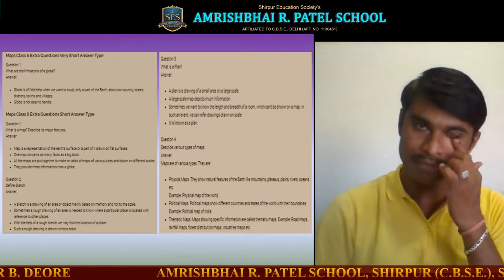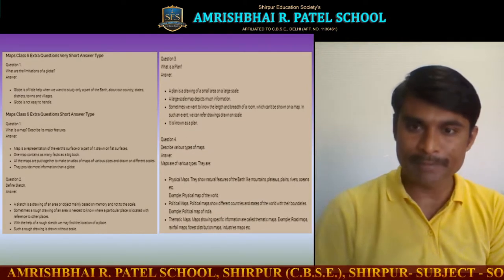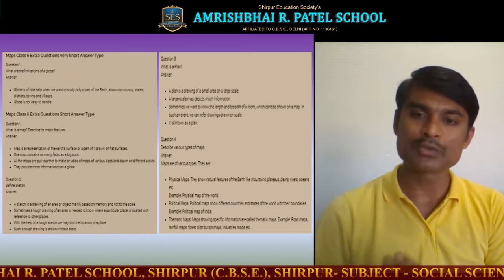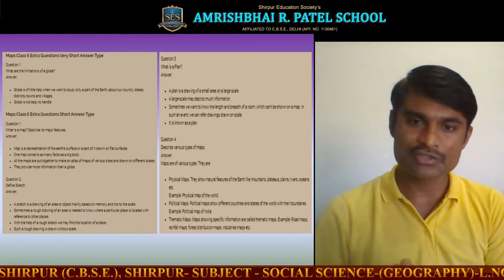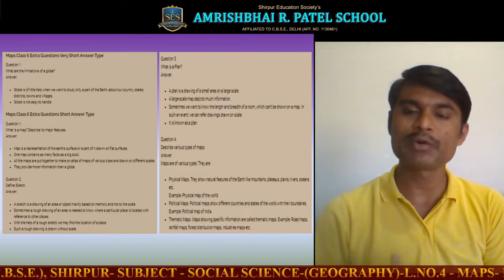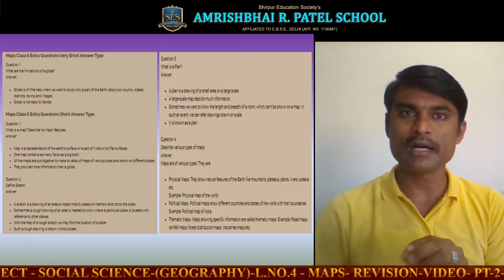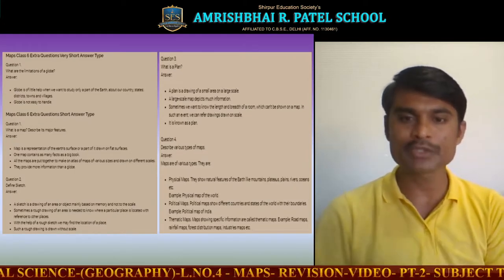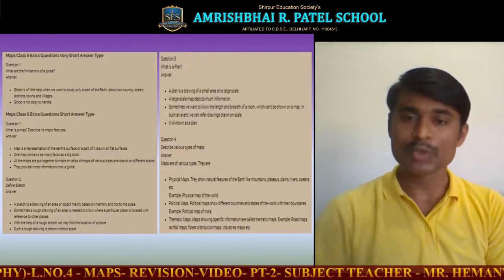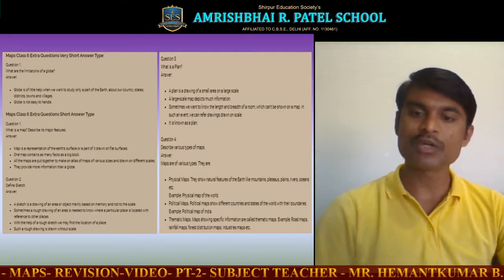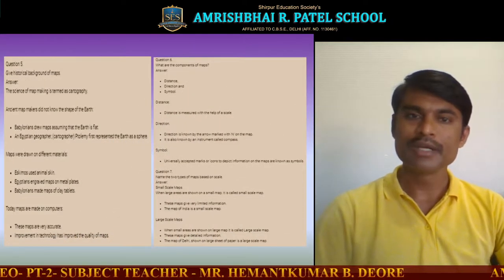Describe the various types of maps. Physical maps show the natural features on the earth like mountains, plains, plateaus, and rivers. Political maps show different countries and states of the world with their political boundaries. Thematic maps are a very specific type of map containing specific information — for example, road maps of India, rainfall maps, and forest distribution maps. They have certain themes, that's why they are called thematic maps.